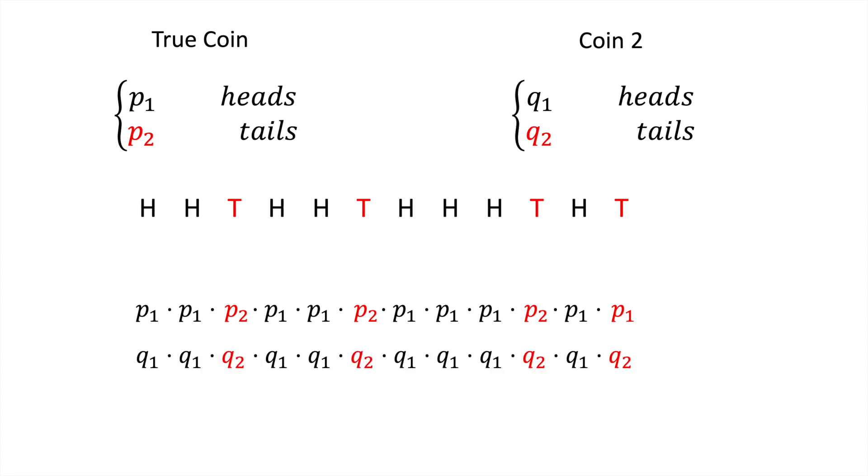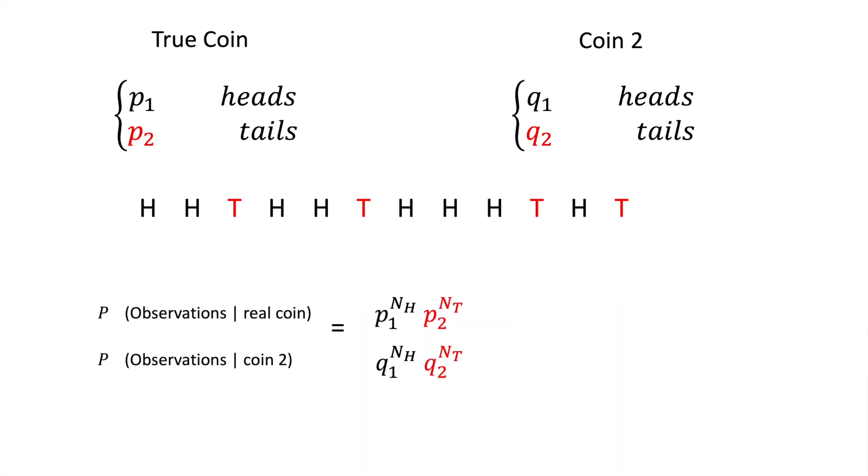These two expressions can then be simplified by realizing it's the product of the probability of each outcome raised to the power of the number of occurrences. For the first coin, this is p1 to the power of the number of heads multiplied by p2 to the power of the number of tails.